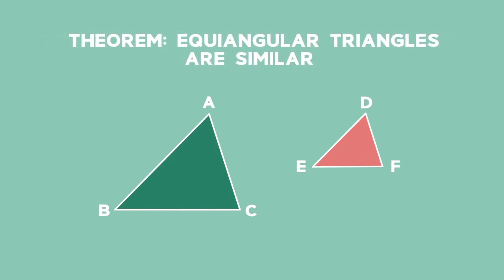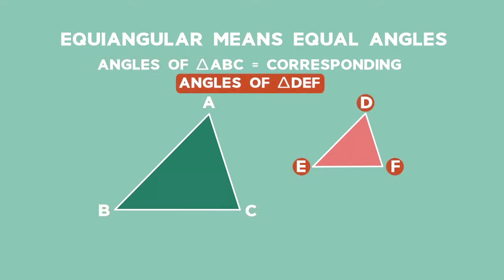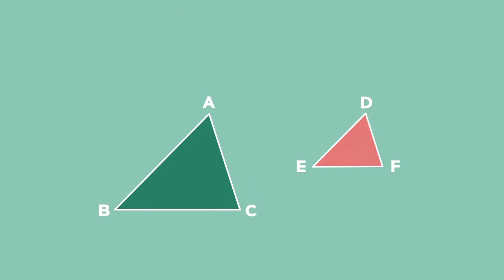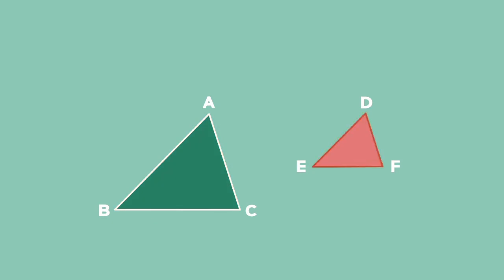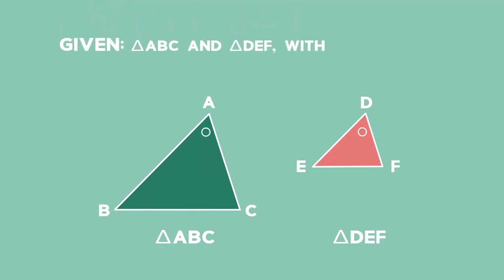Using the angles, we have a theorem that proves that equiangular triangles are similar. The term equiangular means that the three angles of one triangle are equal to the corresponding angles of another triangle. To prove the theorem, we choose two triangles ABC and DEF, labeled in that order. They are given to be equiangular, so we know that angle A equals angle D, angle B equals angle E, and angle C equals angle F.